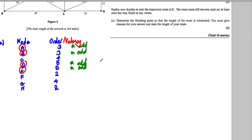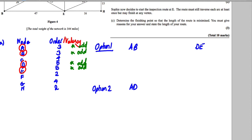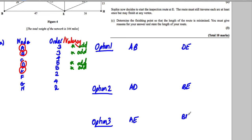Always show your working. We have three pairing options for the odd nodes. Option 1: pair A with B, and D with E. Option 2: pair A with D, and B with E. Option 3: pair A with E, and B with D.